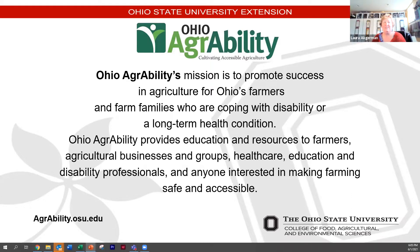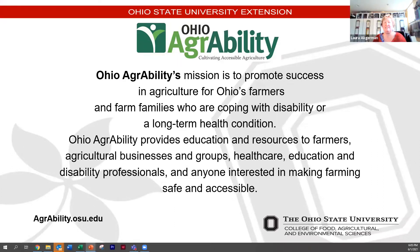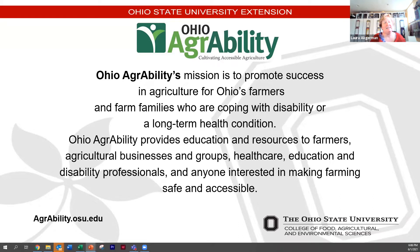Ohio AgrAbility is one of my main jobs here at Ohio State, and our mission is to promote success in agriculture for Ohio's farmers and farm families who are coping with disability or a long-term health condition. Ohio AgrAbility provides education and resources to farmers, agricultural businesses and groups, healthcare, education, and disability professionals, and anyone interested in making farming and gardening safe and accessible. Our website is agrability.osu.edu — spelled A-G-R-A-B-I-L-I-T-Y dot O-S-U dot E-D-U.